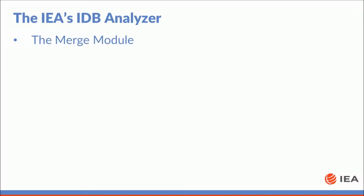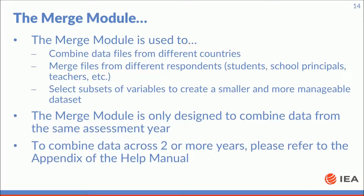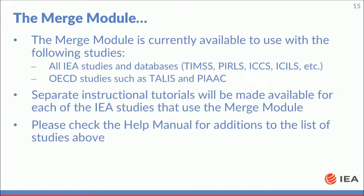The merge module is used to combine data files from different countries, merge files from different respondents such as students, school principals, teachers, etc., and select subsets of variables to create a smaller and more manageable data set. The merge module is only designed to combine data from the same assessment year. To combine data across two or more years, please refer to the appendix of the help manual. The merge module is currently available to use with data from all IEA studies and databases, and OECD studies such as TALIS and PIAC. Separate instructional tutorials will be made available for each of the IEA studies that use the merge module. Please check the help manual for additions to the list of studies.